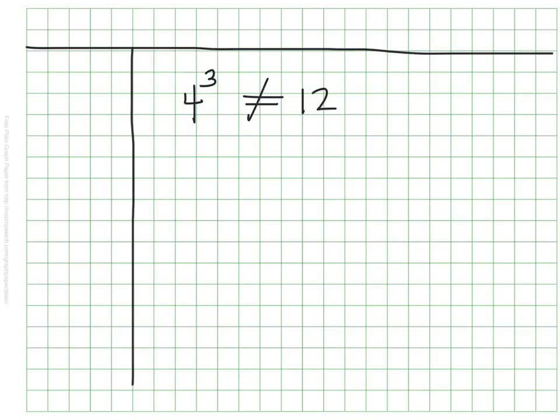But we know better, right? The 3 doesn't tell us to multiply 4 times 3. It tells us how many times the 4 is being used. So really, 4 to the 3rd power means 4 times 4 times 4.